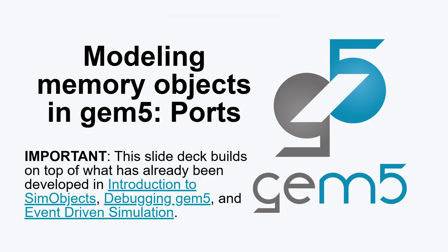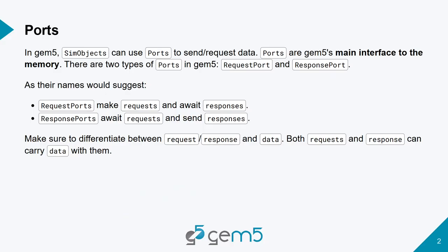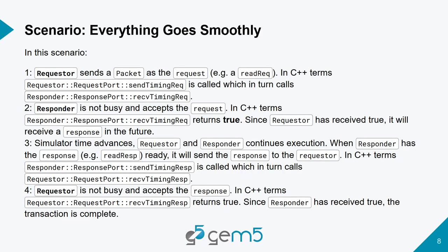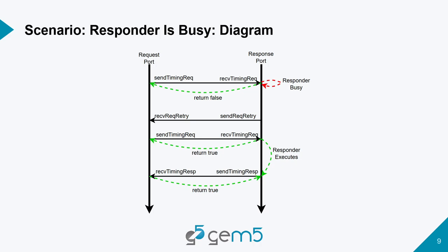Hi everyone, good morning. So last time we finished talking a little bit about ports. Before I start, I want to jump back to the two diagrams that we had and see if anybody has any questions about it. If it's not clear, I can try to make that clear. Otherwise, we're going to start implementing in C++, so it's really important that we have everything clear here. Let's go over this again.